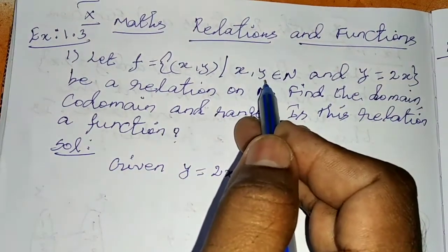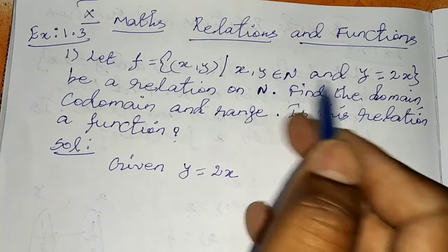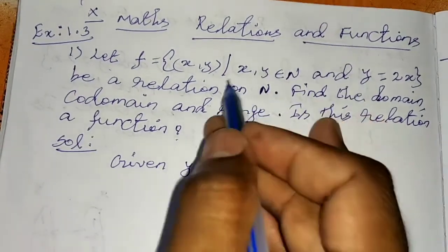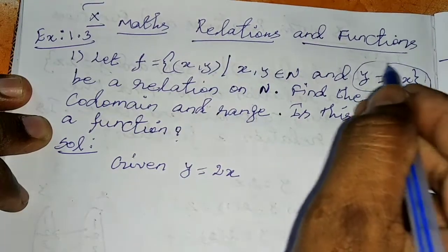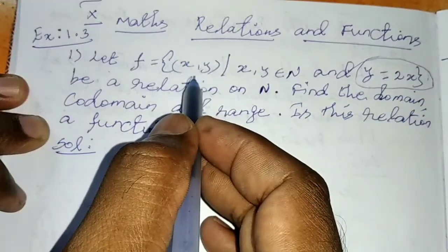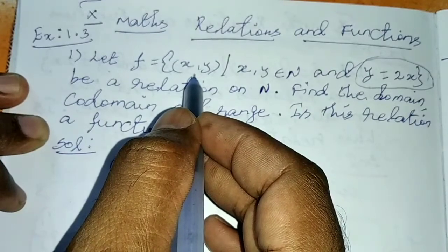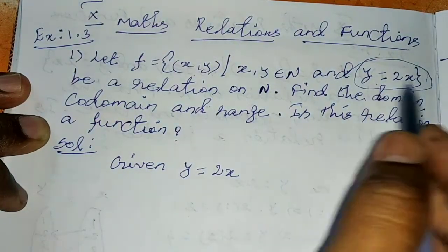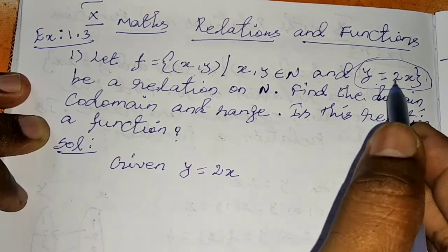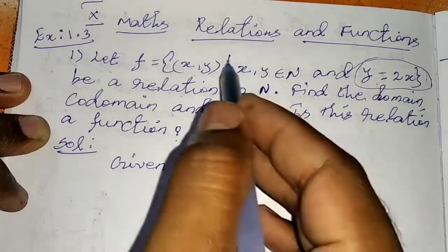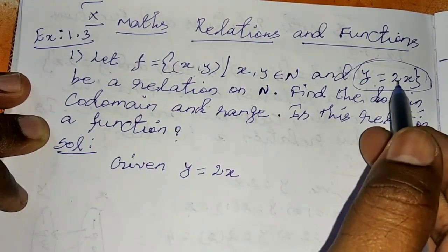So x and y are in N — N means the natural numbers — and y = 2x. This is an important point. Now we apply values of x. The first natural number is 1, so x = 1, y = 2. Next, x = 2, y = 4. So this is our relation.